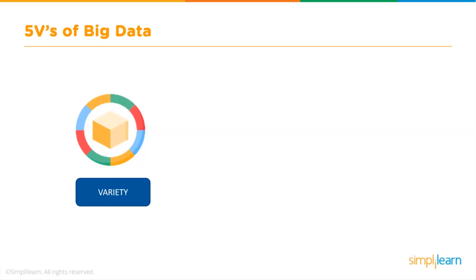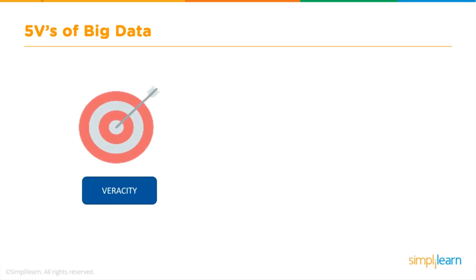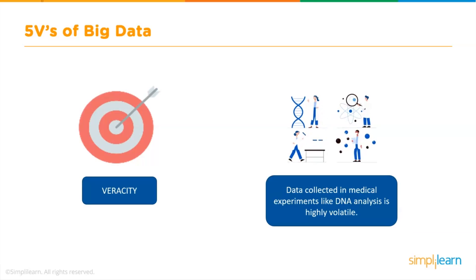Variety is the third V in the 5 V's of Big Data. It refers to the diversity of the data — organizations may gather data from a variety of sources with different degrees of value, in formats ranging from structured spreadsheets to semi-structured formats. The fourth V is Veracity, which speaks to the reliability and quality of the data. The gathered information can be incomplete or unable to offer useful information, so it refers to the degree of confidence in the data. For example, data collected in medical experiments like DNA analysis is highly valid.